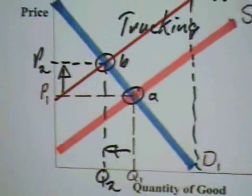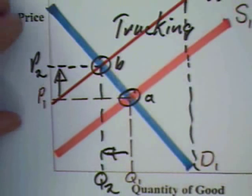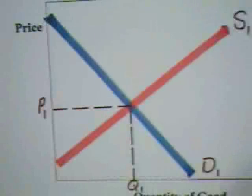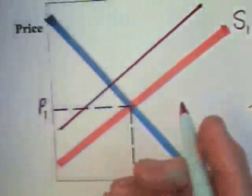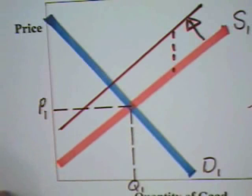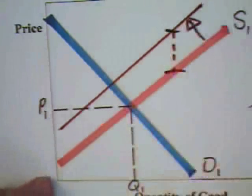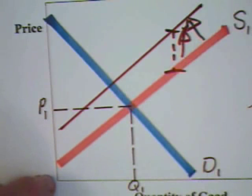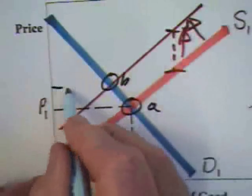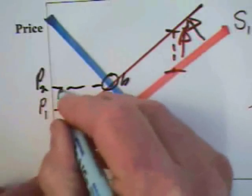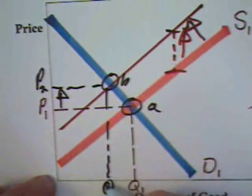Consider that you have a change to a more costly blend of gasoline. What's going to happen? A more costly blend of gasoline means that the supply curve is going to shift backward, primarily because with the more costly blend, producers are going to have to have a higher price at every quantity. The result is going to be that we move from equilibrium A to equilibrium B, resulting in an increase in the price and a cutback in the quantity.